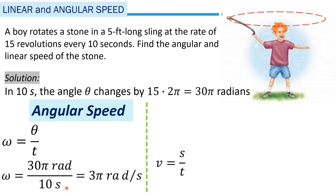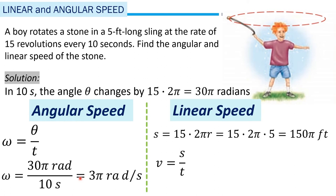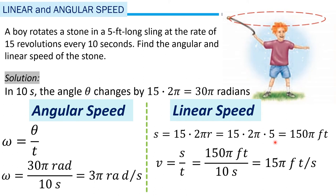The angular speed omega equals theta over time: 30 pi radians divided by 10 seconds equals 3 pi radians per second. For linear speed, arc length s equals radius times theta: radius is 5 feet times 30 pi, giving 150 pi feet. Dividing by 10 seconds, the linear speed is 15 pi feet per second.